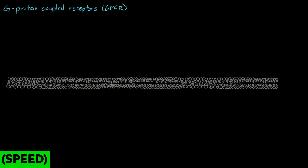The most important characteristic of GPCRs is that they have seven transmembrane alpha helices. If we have this being our cell membrane, and we have this being the extracellular side, and this being the intracellular side...